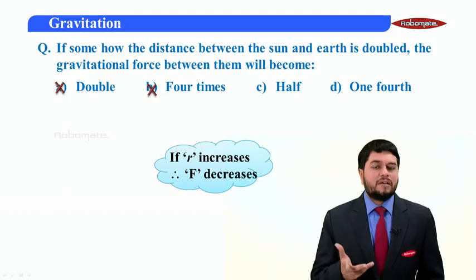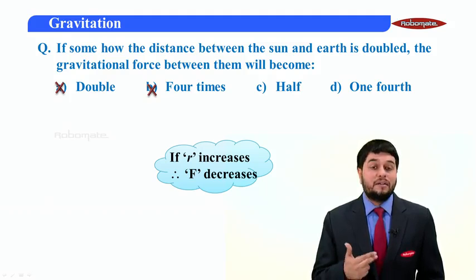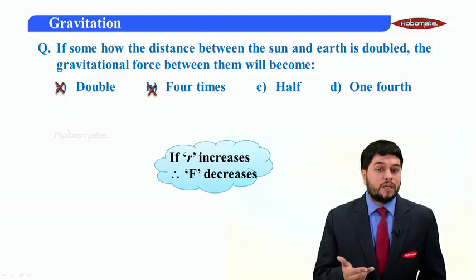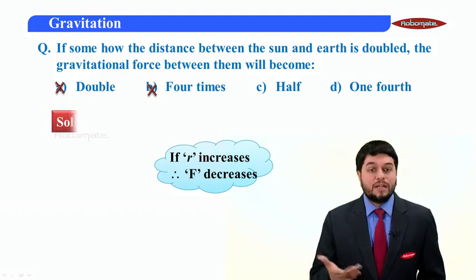And it's a very oral mathematical thing. F proportional to one upon R square. If R is getting double, then force will become one by two square times, means it will become one fourth. We'll understand that in detail.